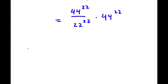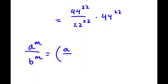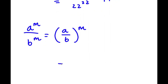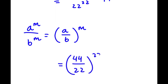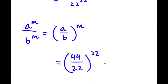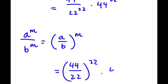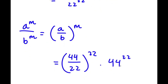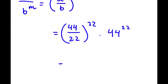If I have something in the form a to the power of m over b to the power of m, this is equal to a over b to the power of m. So in this case, 44 to the power of 22 over 22 to the power of 22 equals 44 over 22 to the power of 22, and I have this times 44 to the power of 22. Now 44 over 22 is simply equal to 2, so now I have 2 to the power of 22 times 44 to the power of 22.